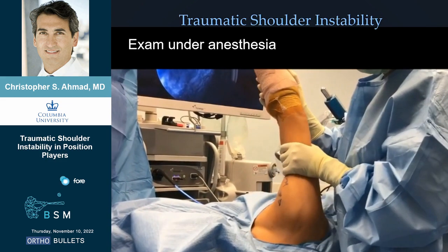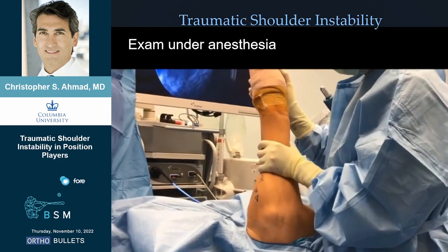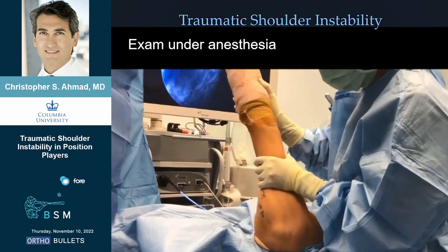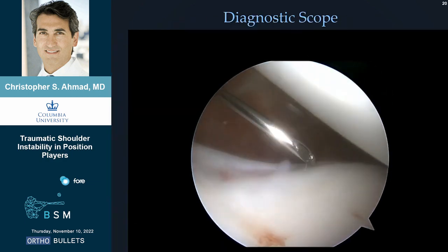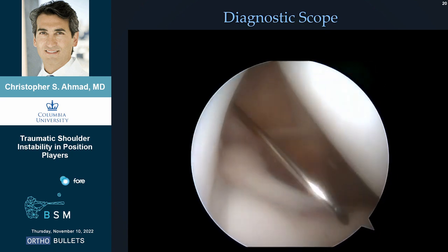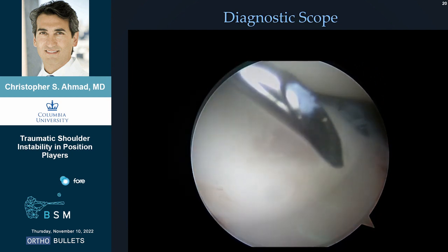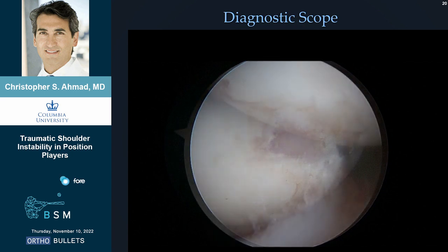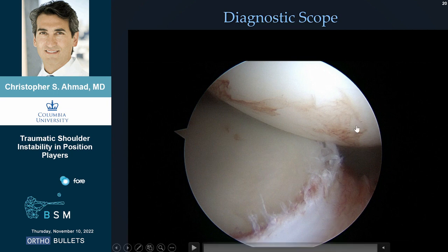This is what the exam looks like if they wind up having surgery — you saw the normal exam, and this is what they let you do when they're under anesthesia. The patient is in the lateral position, lying on their side. You can see the humeral head and the spinal needle showing the labrum. This is a dent in the back of the ball where it hits the glenoid on the way out — that's what we call the Hill-Sachs lesion, that dent. And all of this is torn labral tissue.